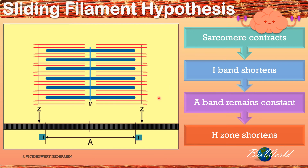Now your muscle has contracted, but muscles cannot remain contracted forever because this process requires use of ATP. Once you have not enough ATP or the impulse has stopped arriving, the muscle will have to relax. So let me next explain how the muscle relaxes.